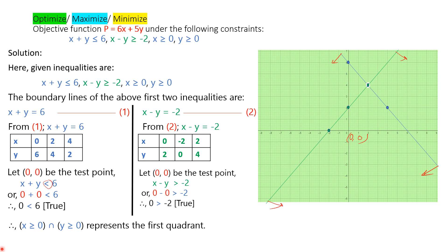x greater than 0 intersection y greater than 0 represents the first quadrant. The constraint x plus y less than or equal to 6 — the inequality is drawn as a green color line. We find the intersecting point in the first quadrant.